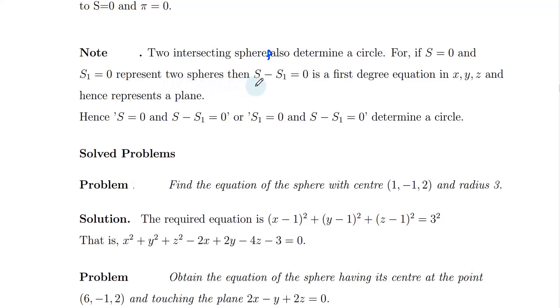S minus S1 equals zero is a first-degree equation in x, y, z. The squared terms of x², y², z² cancel out, so the degree equals 1 — it represents a plane.